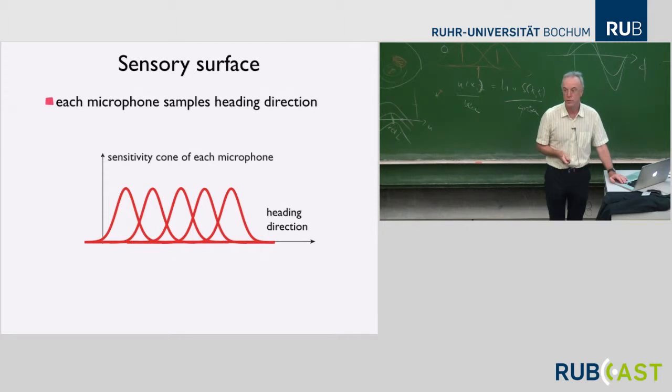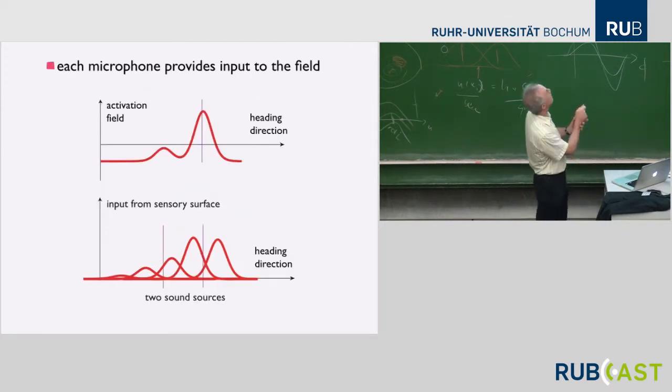That's our sensor information, five numbers. And what we want to do is represent sound sources in the environment. We want to estimate the direction from which the sound comes. So the field is heading direction, builds peaks based on these kind of inputs. For instance, if you have two sources, then the five numbers might look like that. The microphones that are closer to where the sources are are more activated, so their contribution will be a stronger input to the field.